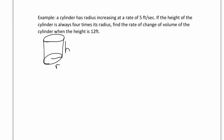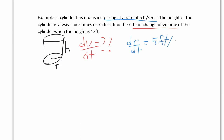What are we looking for? We want to find the rate of change of the volume, so we're looking for dV/dt. What information are we given? We're told that the radius is increasing at a rate of 5 feet per second, so dr/dt equals 5 feet per second. And we're told that the height is 12 feet. Let's write an equation — how would we relate V, r, and h? The volume of a cylinder is πr²h.